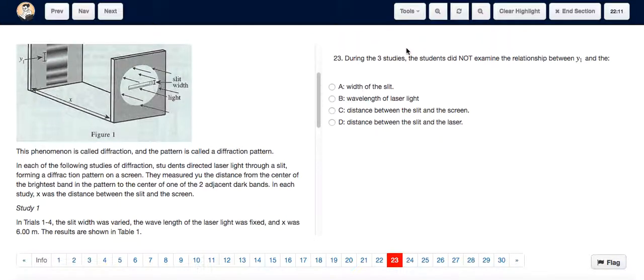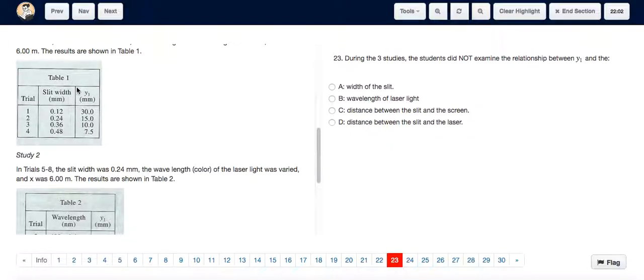Question 23 is basically asking us which of these factors was not at all involved in the experiment. So the width of the slit was definitely measured in one of the experiments, study 1 itself.